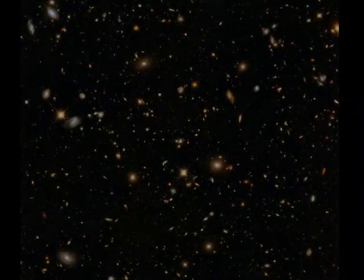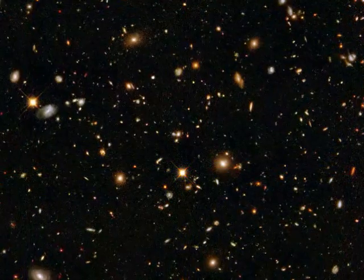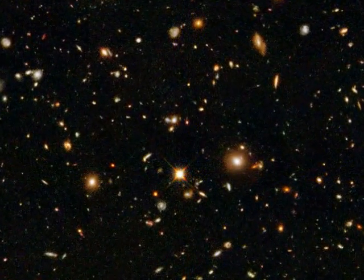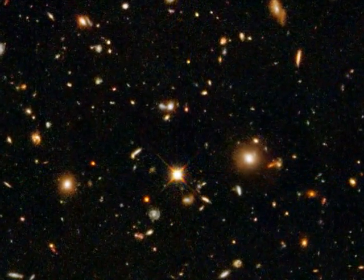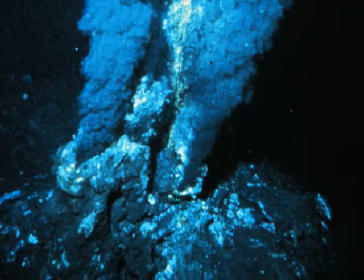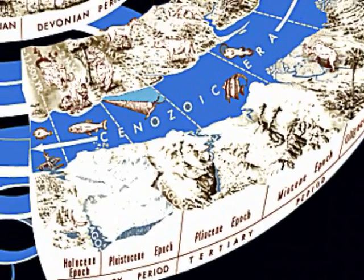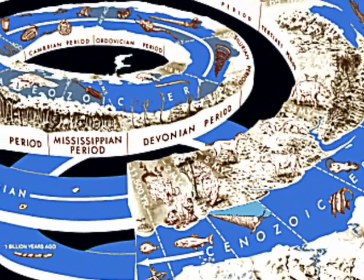There is a lot of misunderstanding about the theory of evolution, so let's emphasize what it is not. Evolution has nothing to do with where the universe came from — that's cosmology. Evolution is not a theory of how life on earth began — that's abiogenesis. All it deals with is how living things change over time.